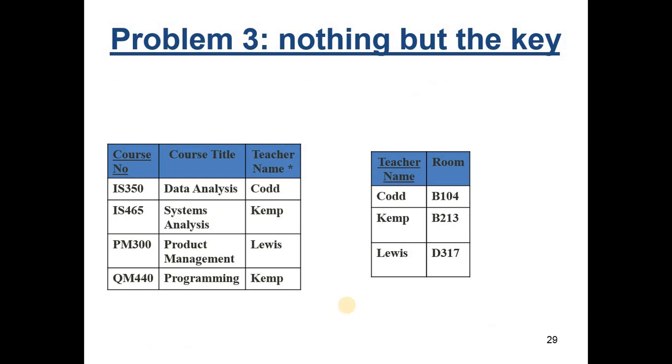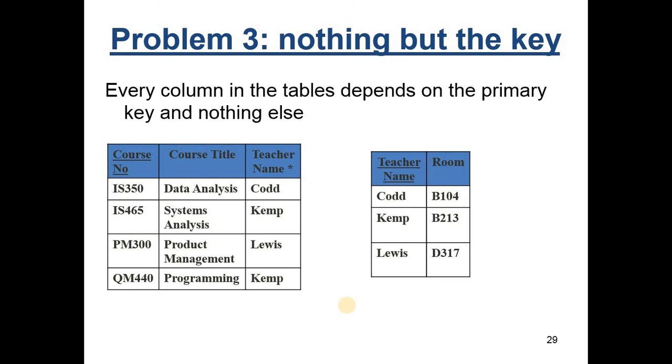That was the third problem that we look for. Nothing but the key. Every column in the tables depends on the primary key of that table and not on anything else. We call that the third normal form. Data always has a key. We only use the compound key where we truly need it. And there is no alternative key that we would have used. Finally, that's a good one to implement.